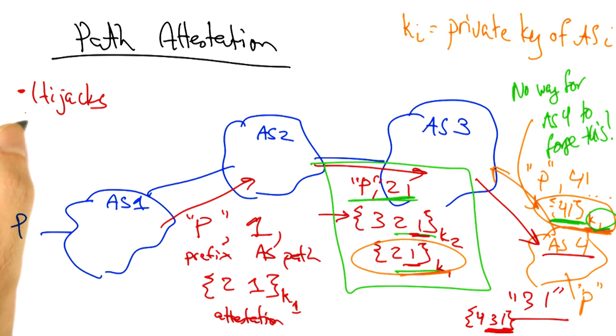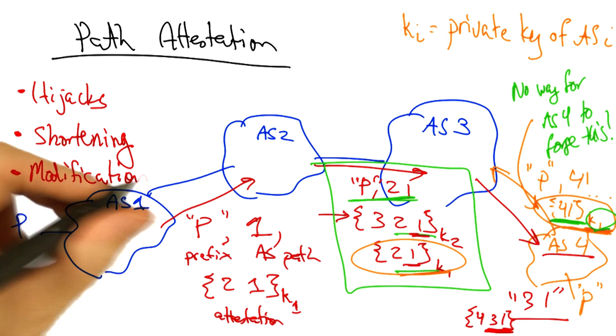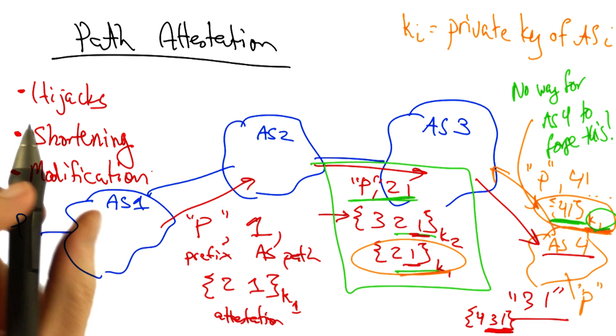So, these path attestations can prevent against some kinds of hijacks as we've seen. They can prevent against these path shortening attacks, and they can also prevent against modification of the AS path.